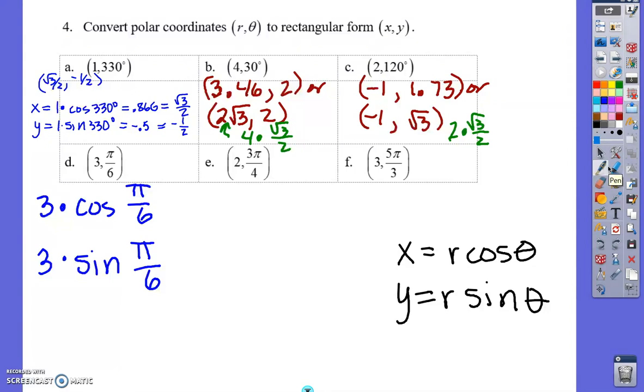So at π/6, which is 30 degrees, the cosine is the square root of 3 over 2. So this becomes 3 times the square root of 3 over 2. This becomes 3 times 1/2. And so my answer for Part D will be 3√3/2, 3/2.